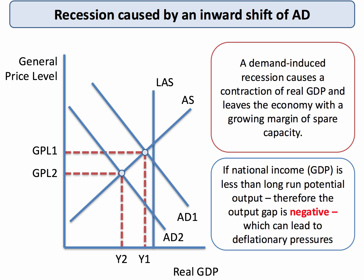One of the causes of a recession can be a big inward shift of demand — sometimes called a demand-induced recession. There could be a fall in exports, a big decline in consumer spending, prompted perhaps by a fall in incomes or confidence. If the aggregate demand curve shifts to the left from AD1 to AD2, the equilibrium level of national output will contract to Y2. You're moving down the aggregate supply curve in the short term. If the recession is deep enough, national output falls well below potential GDP, long-run aggregate supply, causing spare capacity — a negative output gap.